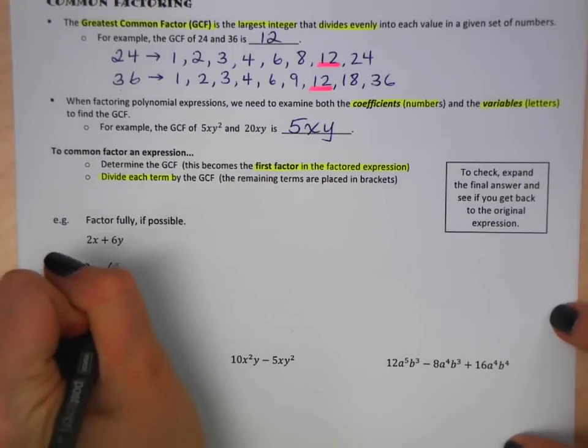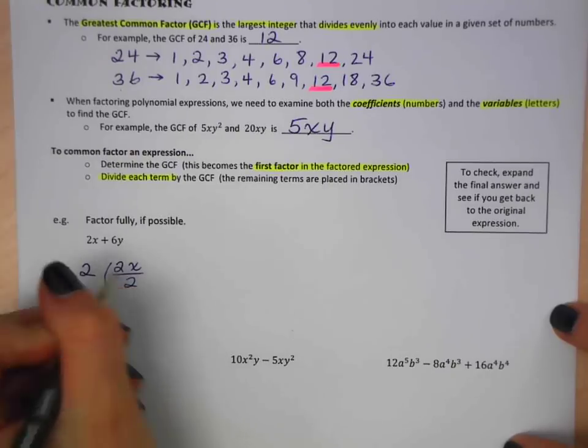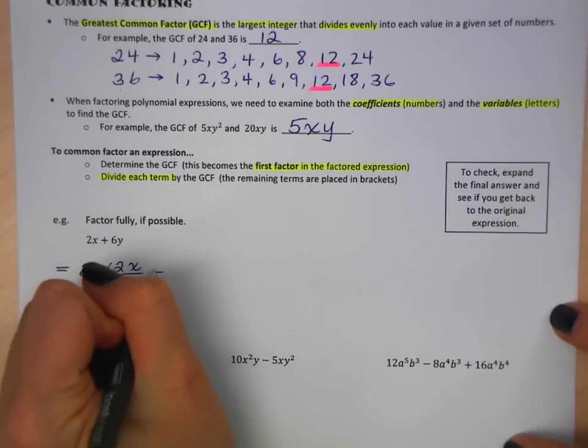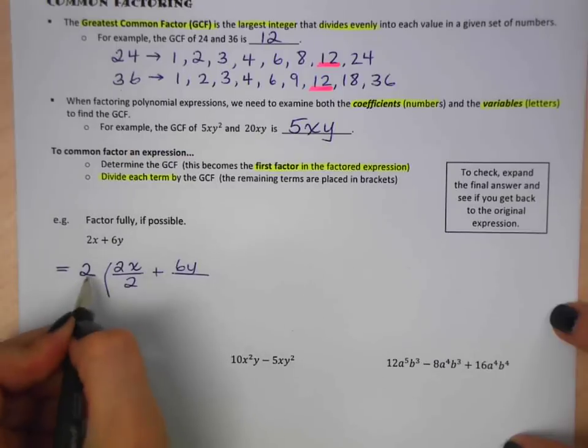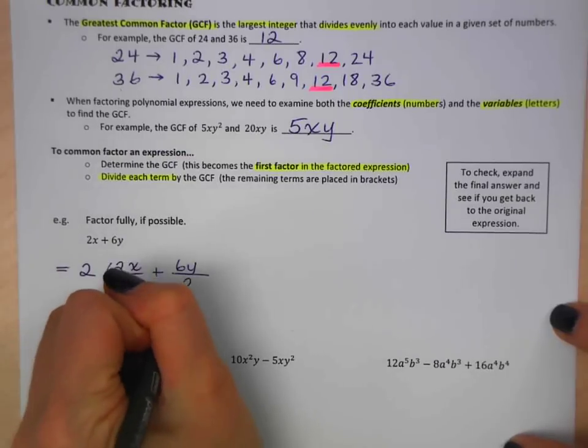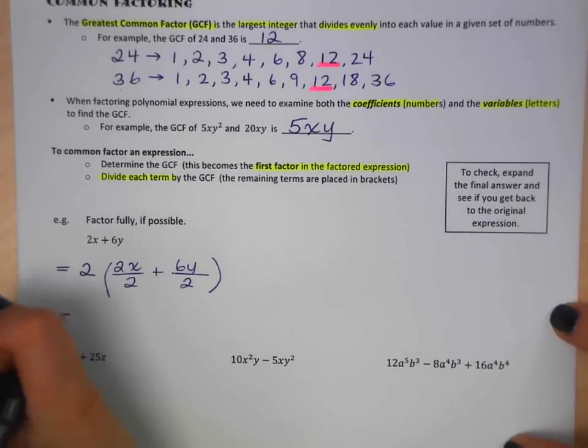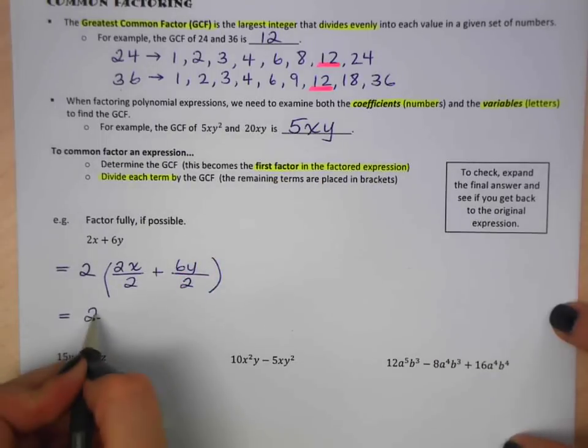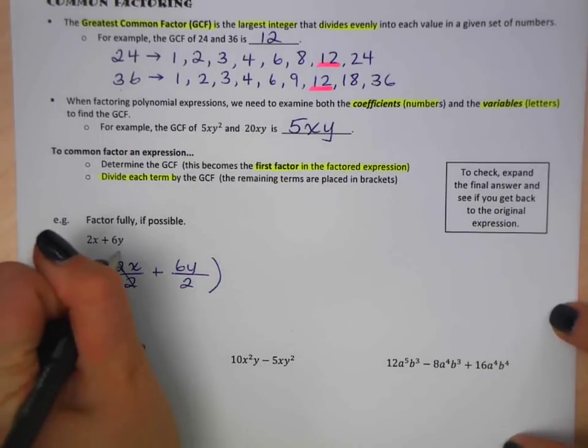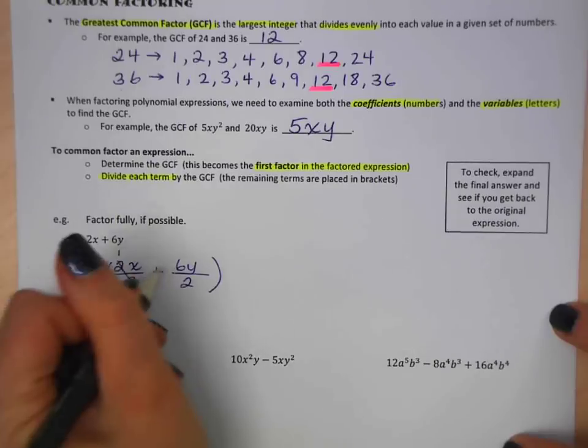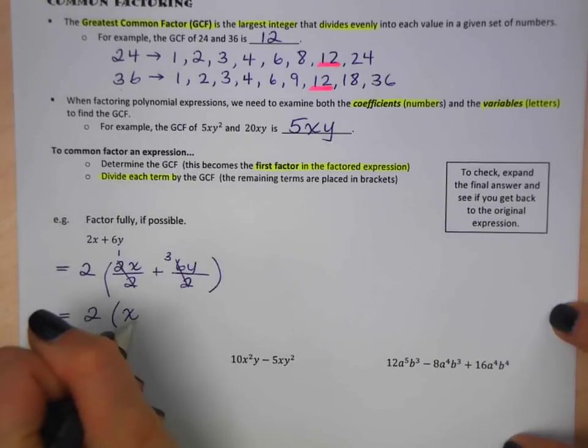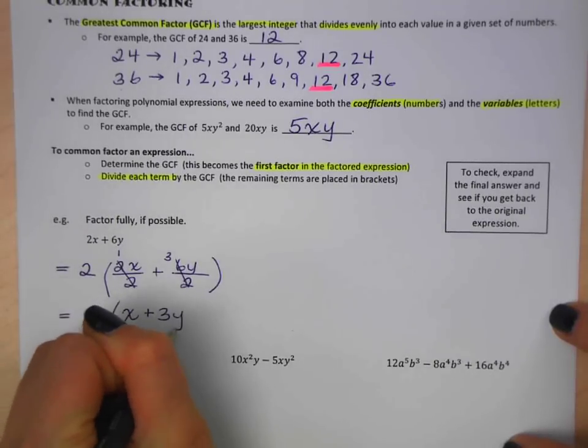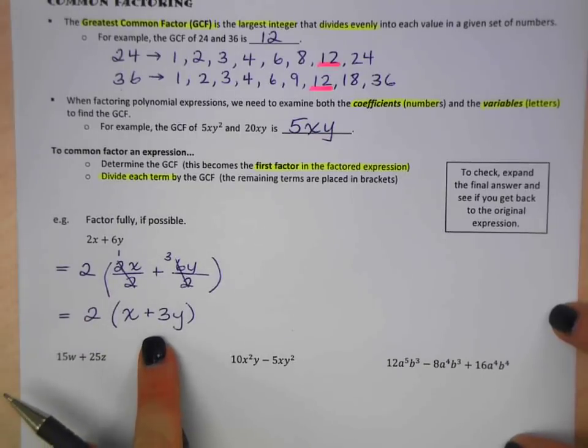So what I do, I'm going to take my term and divide it by my greatest common factor. And the same for this one. And then my final answer, I have to keep this greatest common factor here. It's going to be my first factor in my expression. So 2 and then 2 divided by 2 is 1, so I'm left with just an x. And 6 divided by 2 is 3, so plus 3y. And that is my factored form.